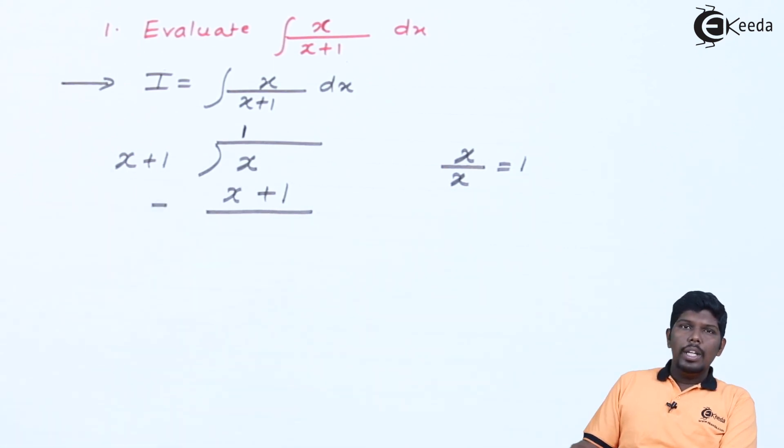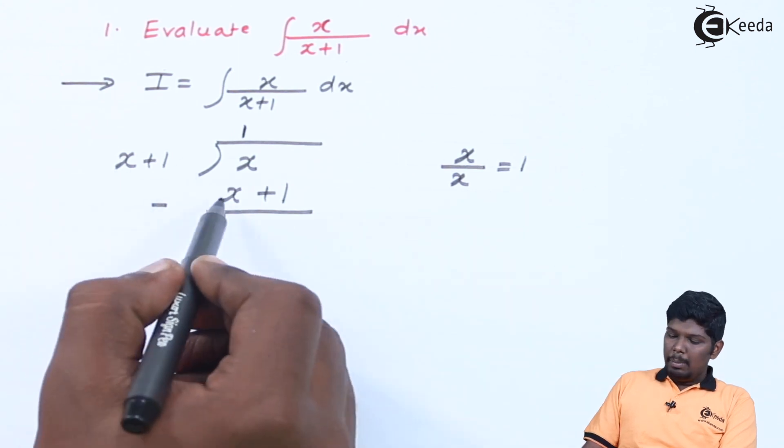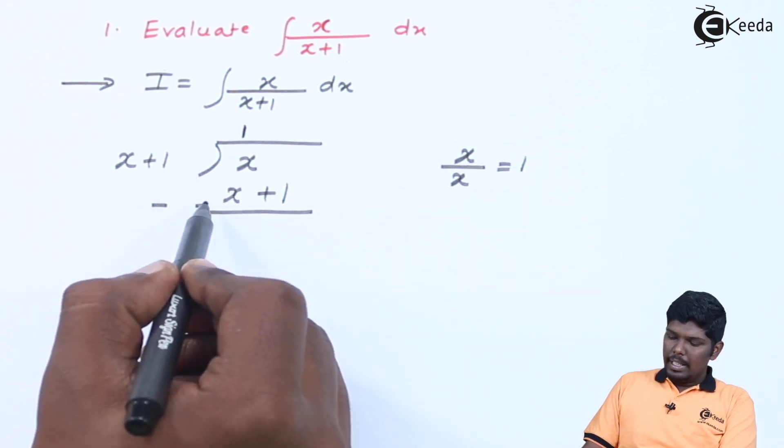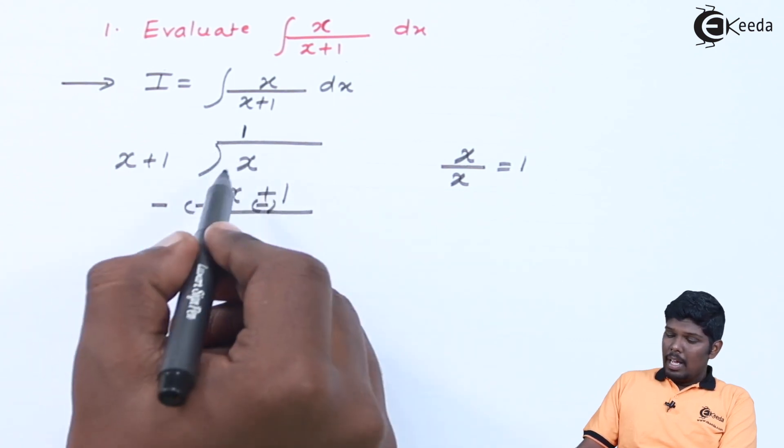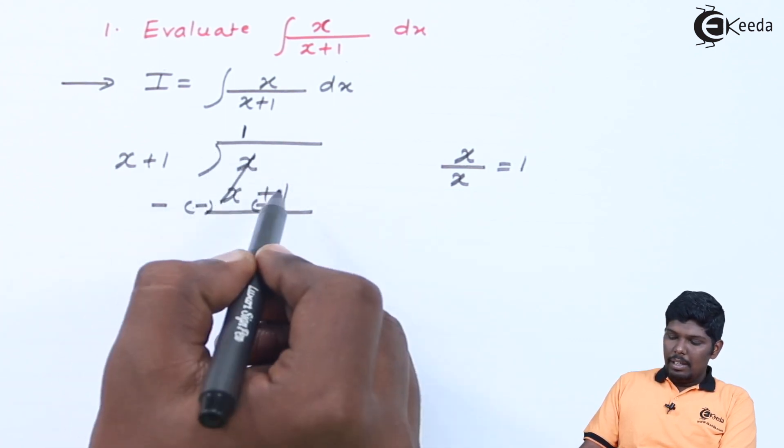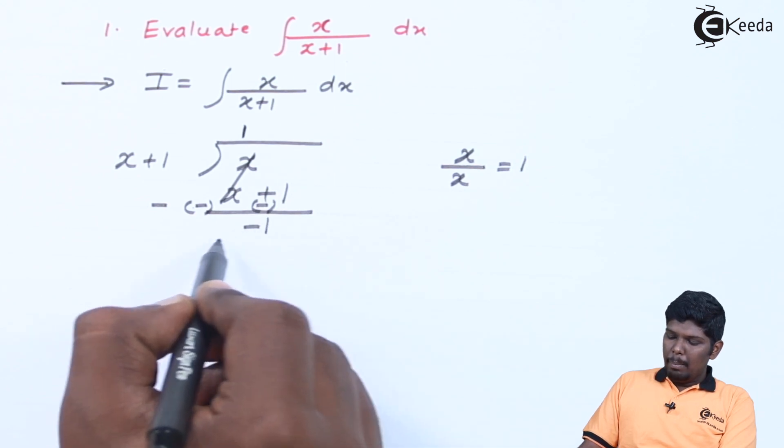Remember during subtraction the sign of second equation changes. That means plus x becomes minus x and plus 1 becomes minus 1. x minus x will be cancelled and the remainder will be minus 1.